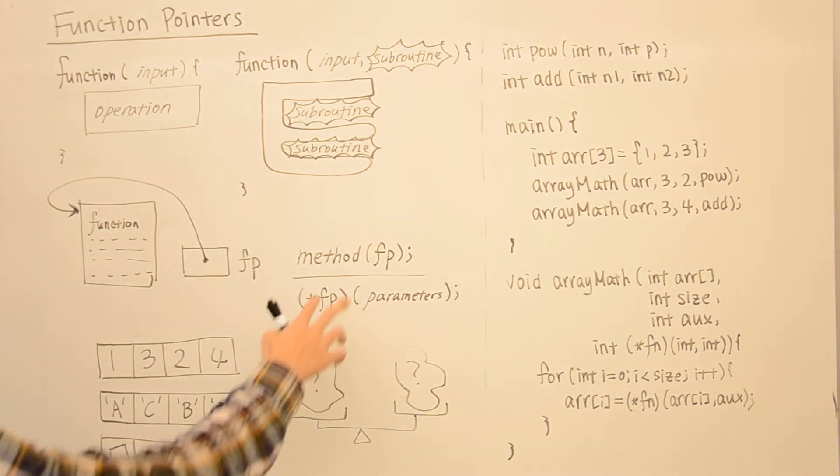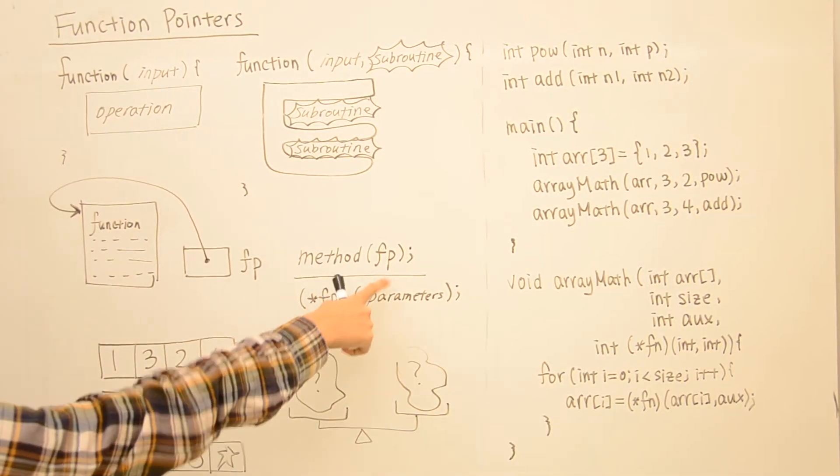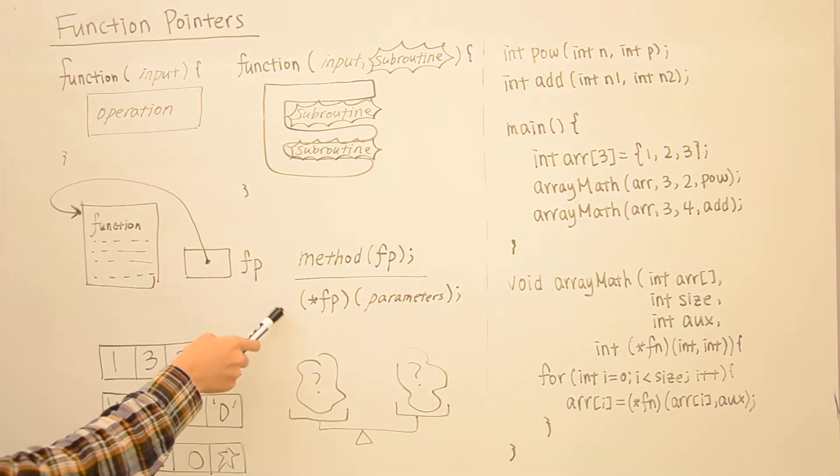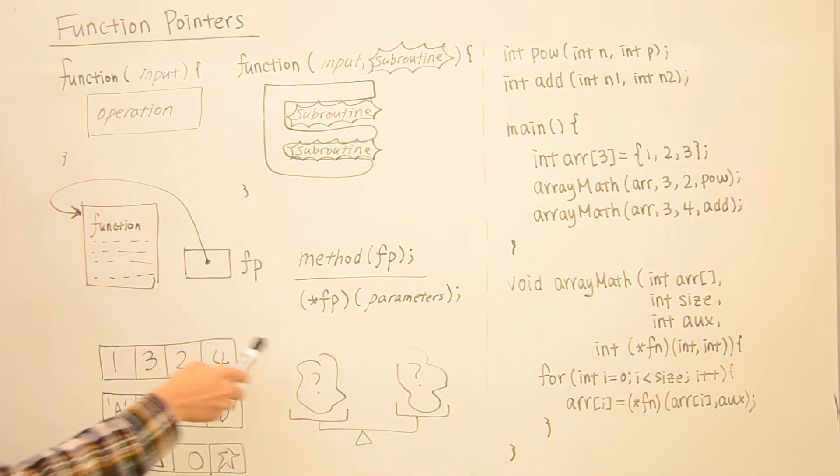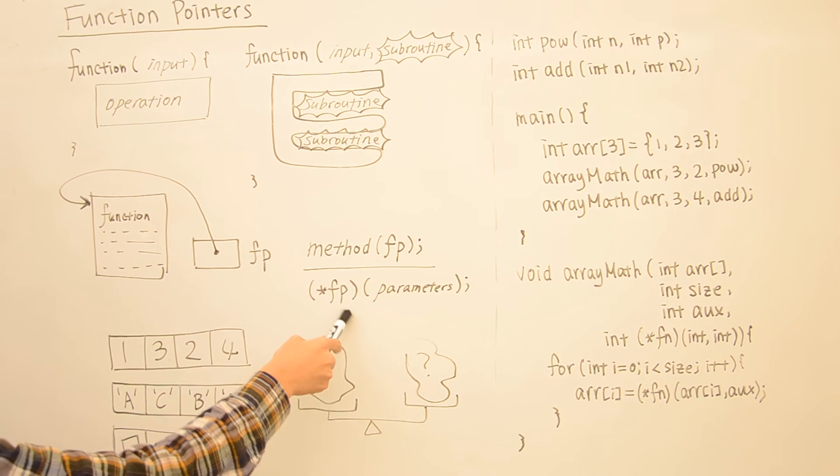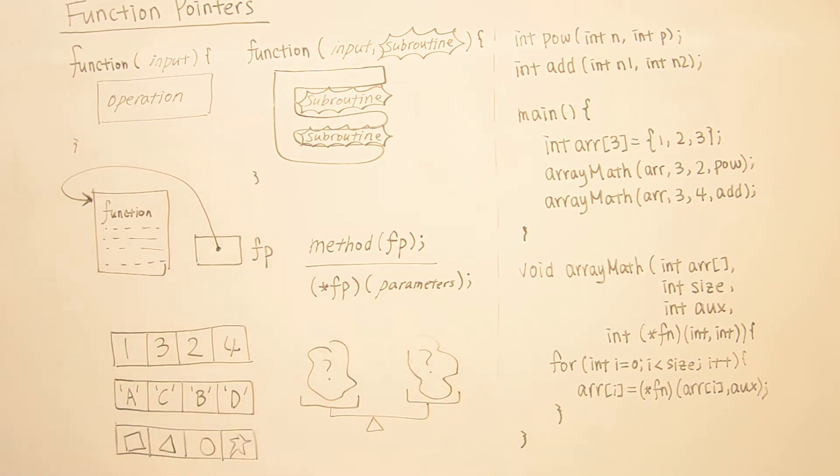So when we are calling a method, we can just pass in fp, the function pointer, and inside the method we can call this function by dereferencing this pointer and passing in some parameters that it's supposed to be.